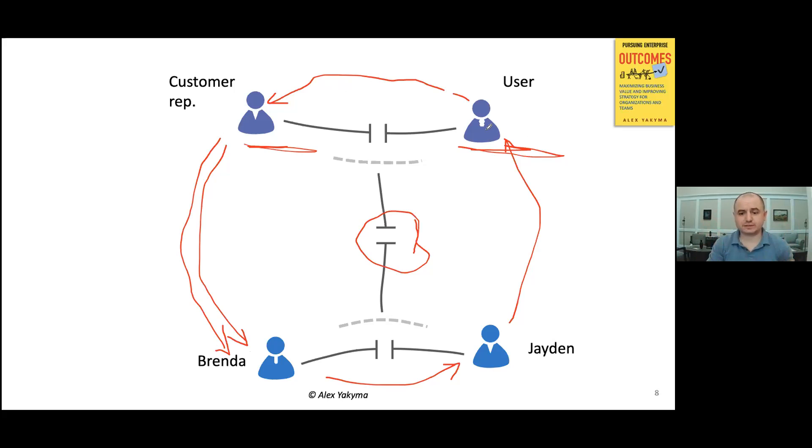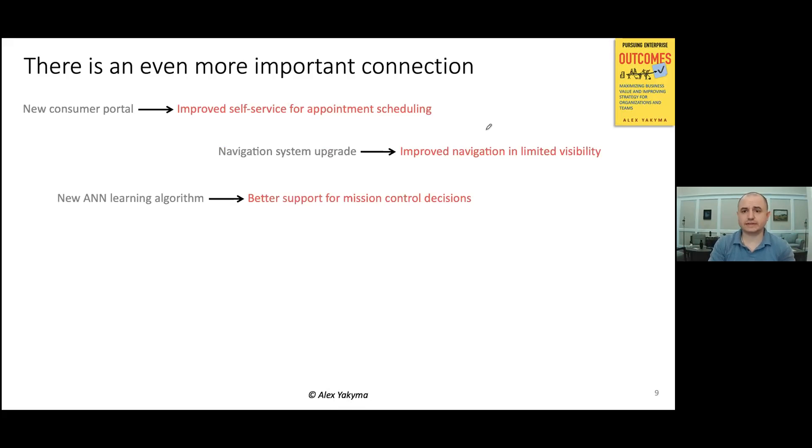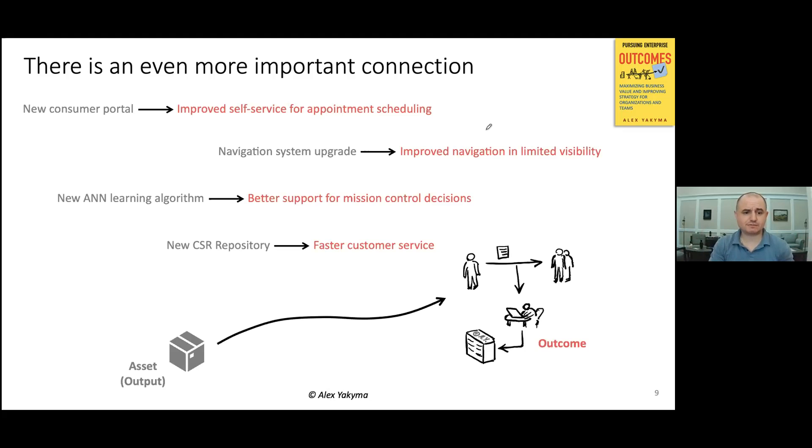Now, connections matter tremendously, but there's one type of connections that actually matters even more. Look, when we are building something, let's say we're building a new consumer portal, we build it for a purpose. In this case, to get improved self-service for appointment scheduling. Or when we go ahead and build a navigation system upgrade, that is to ensure improved navigation and limited visibility in this case. Or when we try to create a new neural network learning algorithm, that is to provide better support for mission control decisions. Or if we go, for instance, with a new customer service repository, that's to improve the customer service and so on. So you see the pattern here. We have something on the left, which is the asset or the output of our effort. And we have something on the right, which is the outcome.